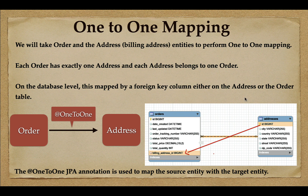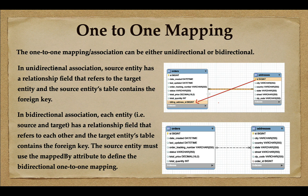At the database level, this one-to-one mapping is represented by a foreign key column either on the address table or the orders table. Looking at the entity relationship diagram, we have an orders table and an addresses table, and you can see a column 'billing_address_id' which is a foreign key to the addresses table. The primary key of the addresses table becomes a foreign key in the orders table. One-to-one mapping can be either unidirectional or bidirectional, and I'll demonstrate both in this section.